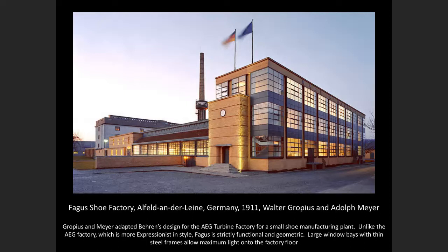One of Gropius's first important projects was the Fagus shoe factory in Germany in 1911, teamed with Adolf Meyer. This is really a direct descendant of the AEG turbine factory by Behrens, which Gropius would have been familiar with — he probably worked on it while in Behrens's office. It's not a copy, but you can see the same elements reinterpreted in Gropius's manner: brick masonry with horizontal lines, no curves, no canting, sharp angles — a trademark of Gropius and the Bauhaus.